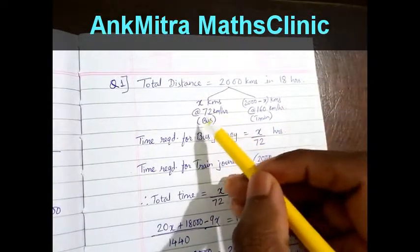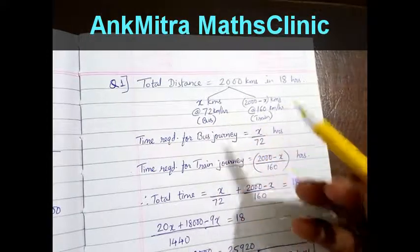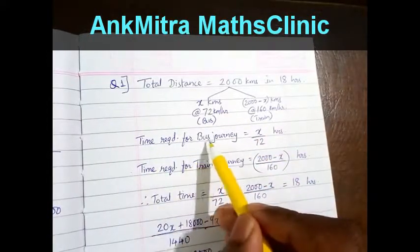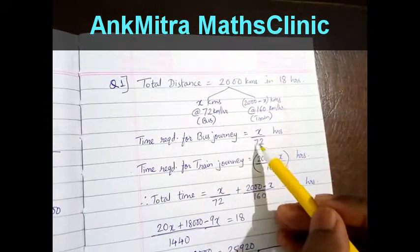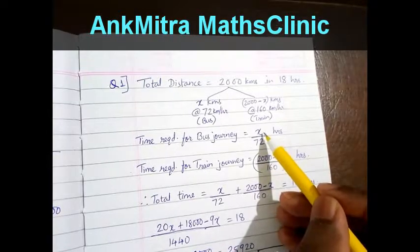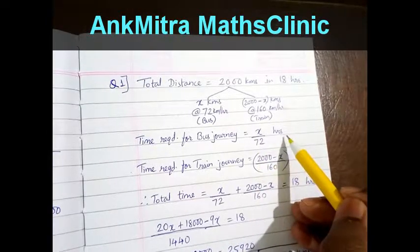Using this we will find the time required for each of these two journeys. Time required for bus journey will be distance divided by speed which comes to x divided by 72 hours.